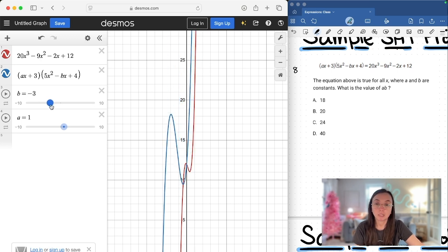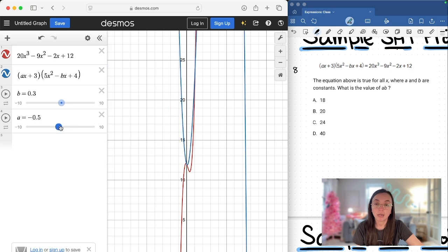So b kind of makes stuff go up and down, a kind of does some flippy thing. All right, so what we want to do is essentially move this around until we can get it to match.